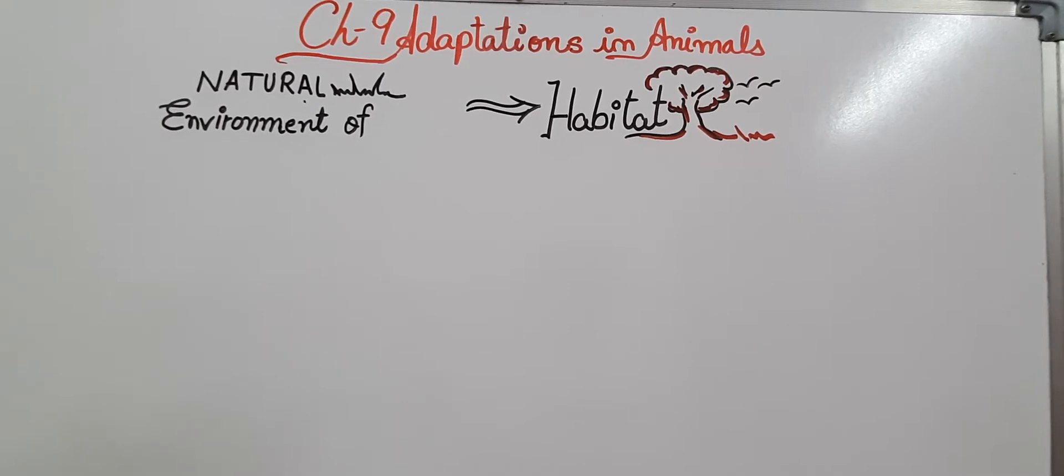In the last video we learned about habitat, which means the natural environment of any animal. And we learned about types of animals - they are divided into invertebrates and vertebrates.